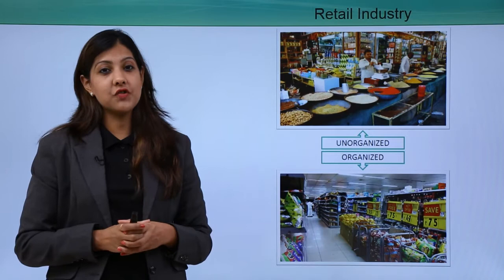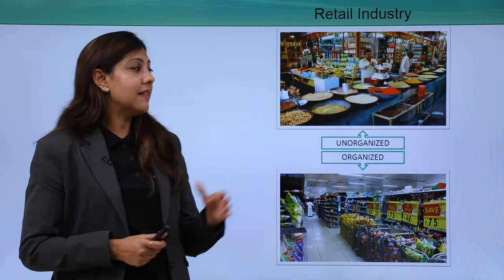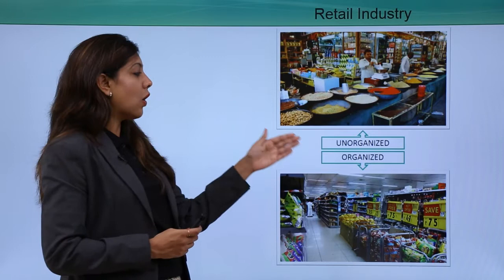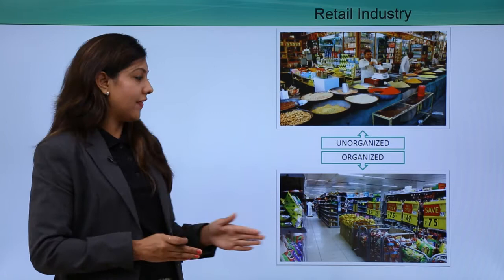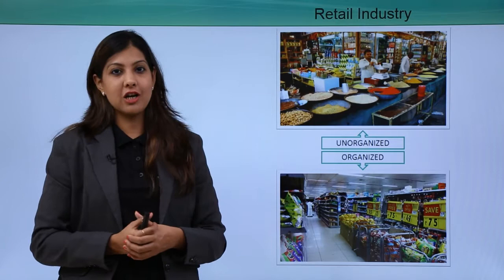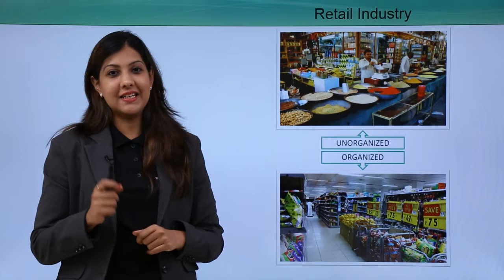There are two formats under retail: the unorganized sector and the organized sector. In the unorganized sector there is no taxation, and stores are typically single shops operated by families across generations. In the organized sector, things are more sorted, with a large variety of products and services sold under one roof.